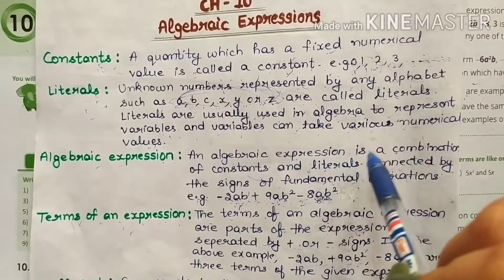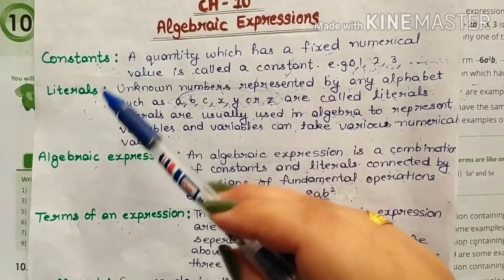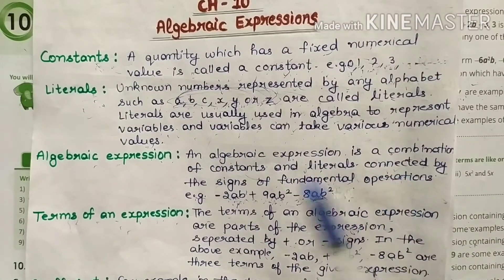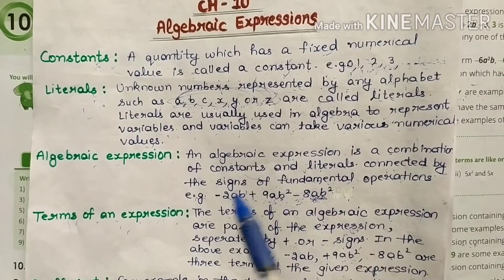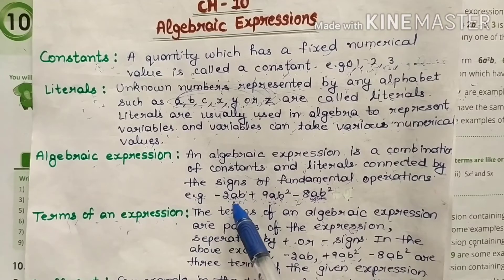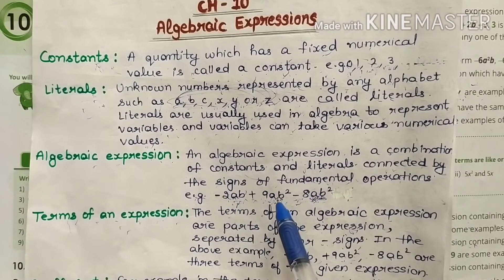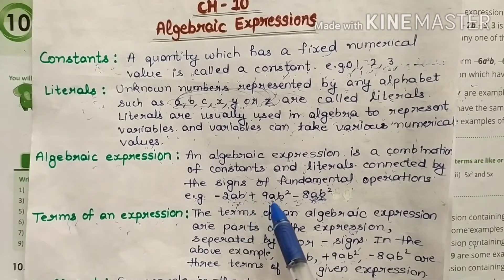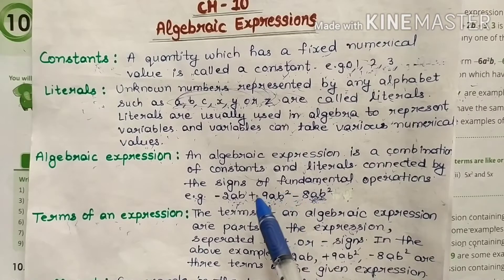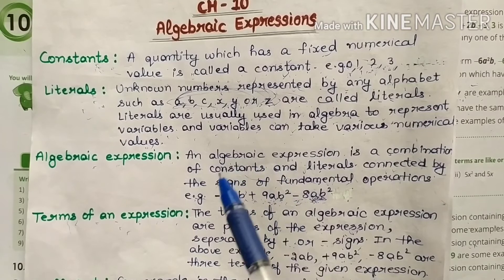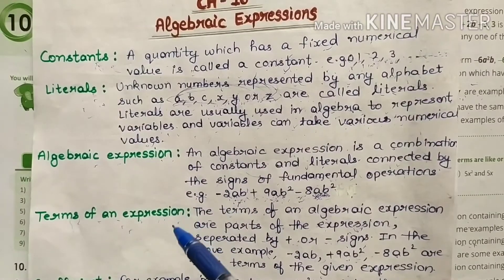Next is algebraic expressions. An algebraic expression is a combination of constants and literals connected by the signs of fundamental operations. For example: minus 2AB plus 9AB square minus 8AB square. Here A, B, AB square, and AB square are literal factors and these are connected by positive and negative signs.